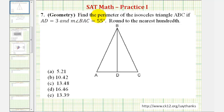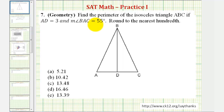Welcome to a practice SAT math question from the geometry section. We want to find the perimeter of the isosceles triangle ABC if the length of AD equals three and the measure of angle BAC equals 55 degrees. We also want to round to the nearest hundredth.